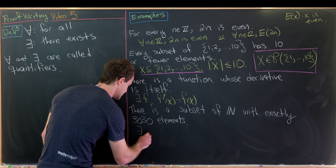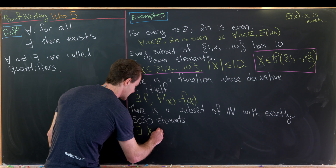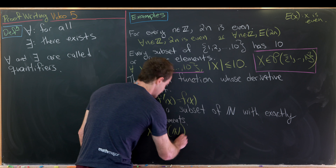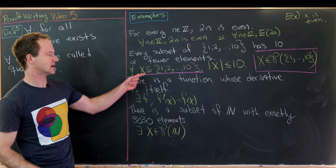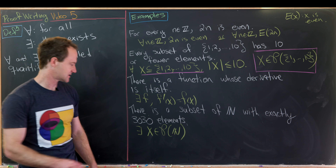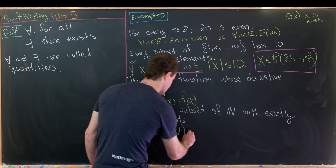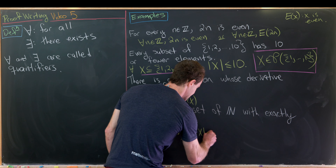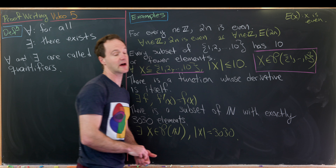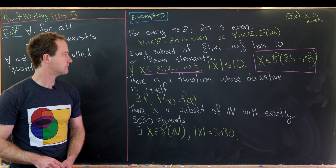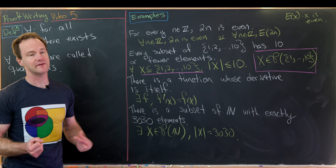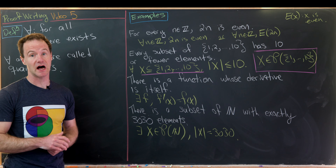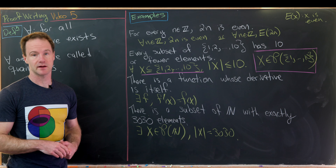For the next example, we say: there exists an x in the power set of the natural numbers — or equivalently, x is a subset of the natural numbers — such that the cardinality of x equals 3030. We'll do quite a few examples here because it's helpful to see a lot of these.